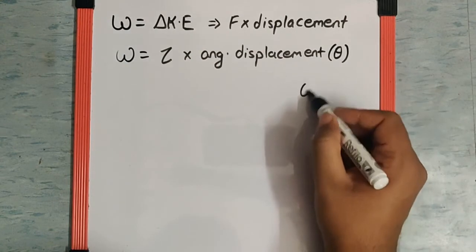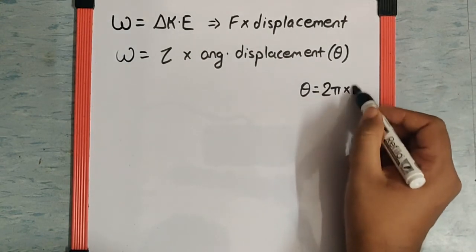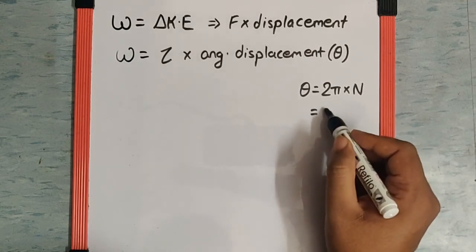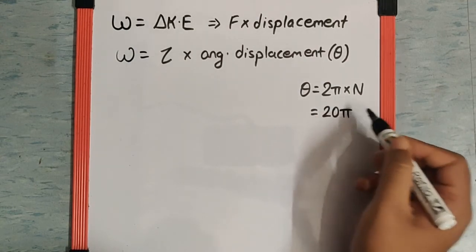Now theta in general is 2 pi into number of revolution which over here given as 10 so this makes it 20 pi radian.